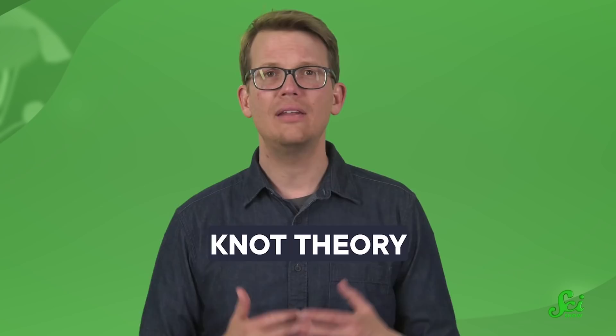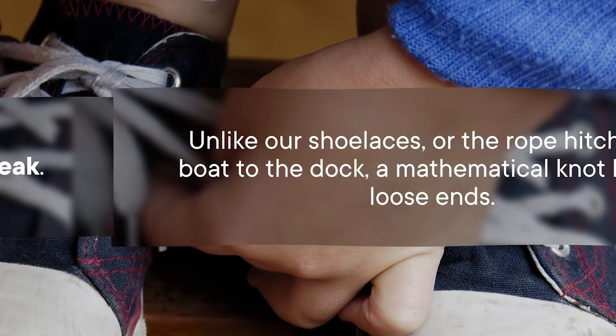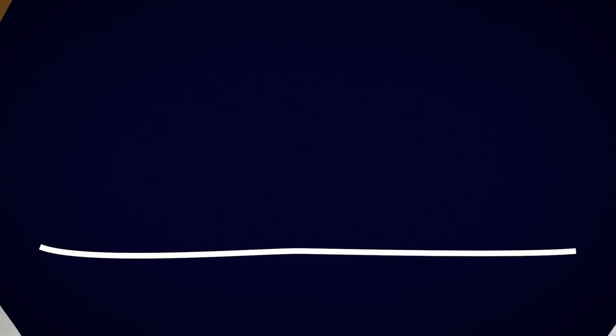Now, it's worth mentioning at this point that a mathematician's definition of a knot is probably different from what yours or mine is. Unlike our shoelaces, or the rope hitching a boat to the dock, a mathematical knot has no loose ends. The string can have crossings and intertwinings, but there can't be any break. It's one continuous loop.